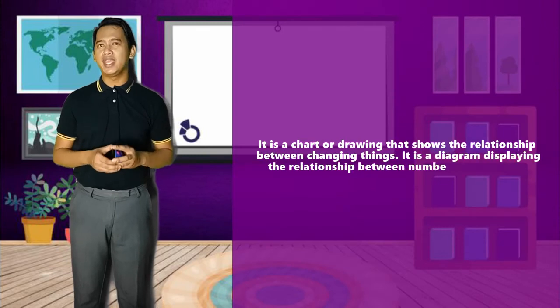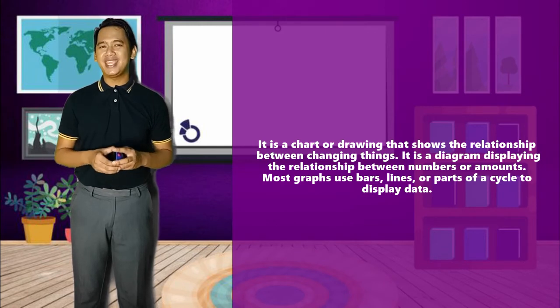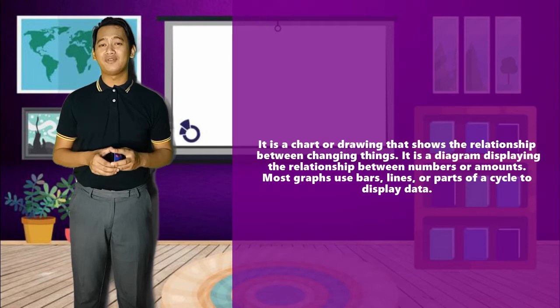How about the next feature? That's true! The next one is a graph. What then is a graph? Correct! It is a chart or drawing that shows the relationship between changing things. It is a diagram displaying the relationship between numbers or amounts. Most graphs use bars, lines, or parts of a cycle to display data.